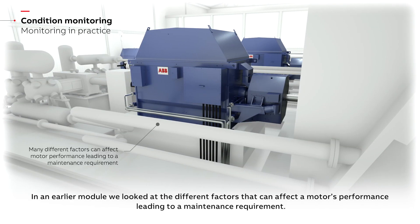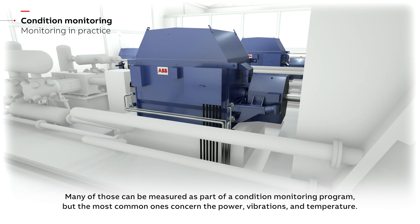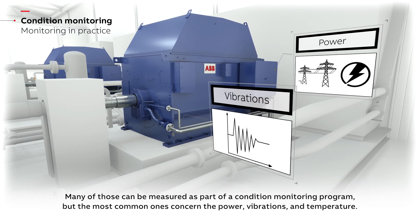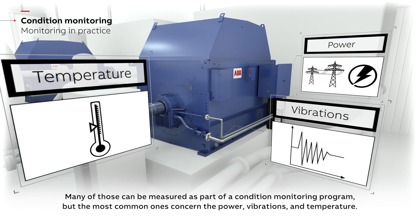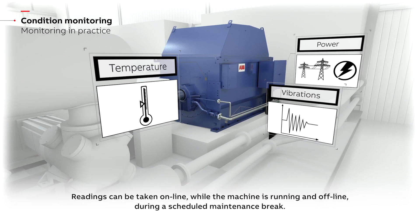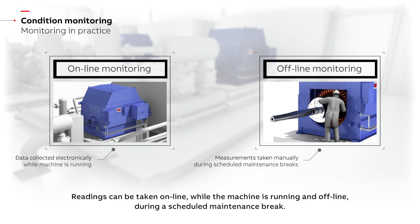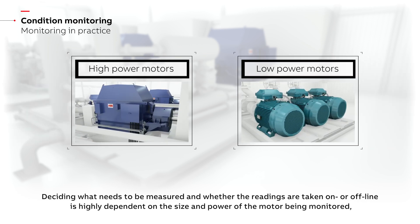In an earlier module we looked at the different factors that can affect a motor's performance, leading to a maintenance requirement. Many of those can be measured as part of a condition monitoring program, but the most common ones concern power, vibrations, and temperature. Readings can be taken online while the machine is running, and offline during a scheduled maintenance break. Deciding what needs to be measured and whether the readings are taken on or offline is highly dependent on the size and power of the motor being monitored.